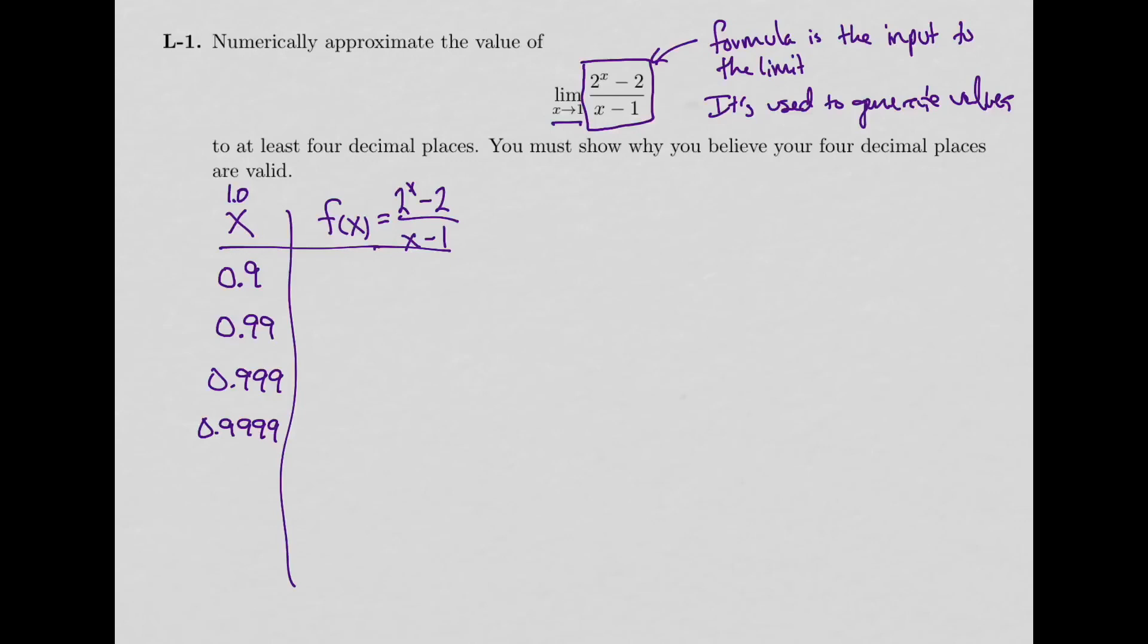What I'm going to do now is I'm going to use a calculator to find the values using this formula of what happens when you put 0.9 into my function. And it's important that I use parentheses in the right way, especially if my calculator doesn't do a nice fraction form like this. So I'm going to do 2 to the power of my x value, minus 2, and then divide it by x minus 1, where x is going to be replaced by my decimal value.